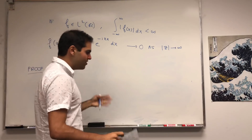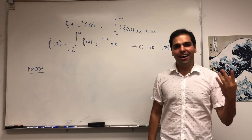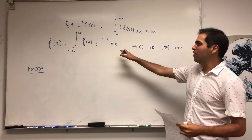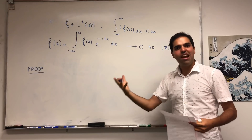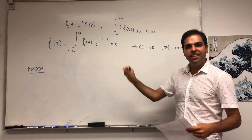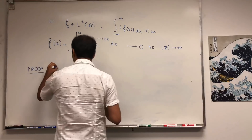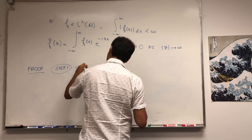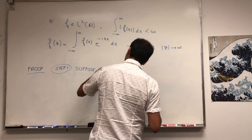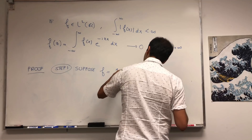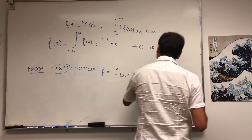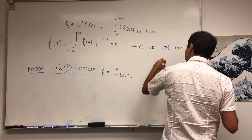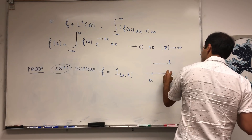This also explains how, for the Lebesgue integral, you define it by steps. First of all, let's assume the function is very easy — namely, it's just the indicator function of an interval. Step one: suppose f is the indicator function of some interval [a, b], which means f looks like this: on the interval [a, b], it's one; elsewhere, it's zero.